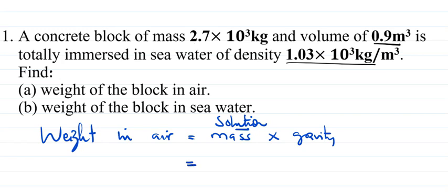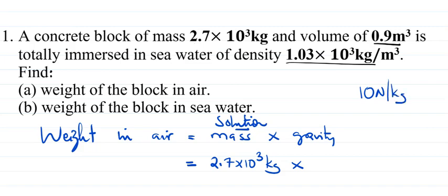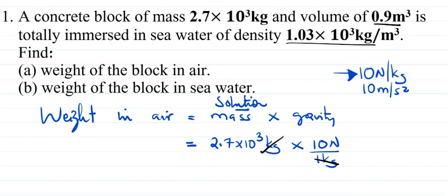Our mass is 2.7 times 10 to the power 3 kilograms. For gravity, we use 10 newtons per kilogram, which is 10 meters per second squared for this problem. So we have 10 newtons per kilogram, and the kilograms cancel, leaving us with 2.7 multiplied by 10 to the power 3.